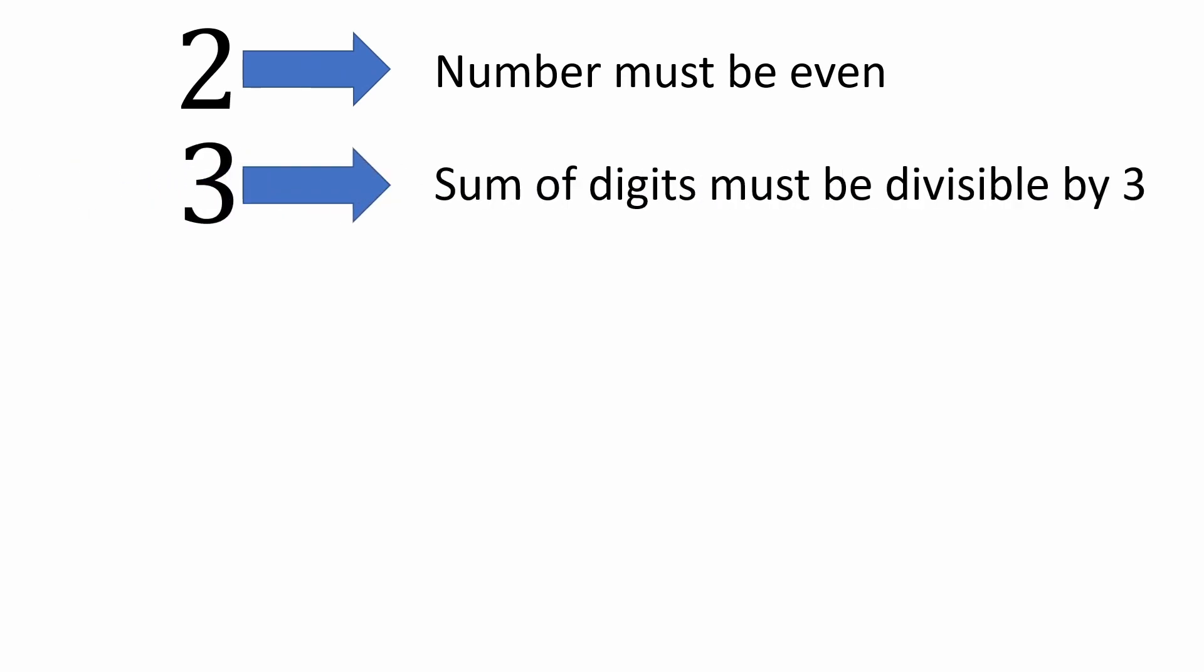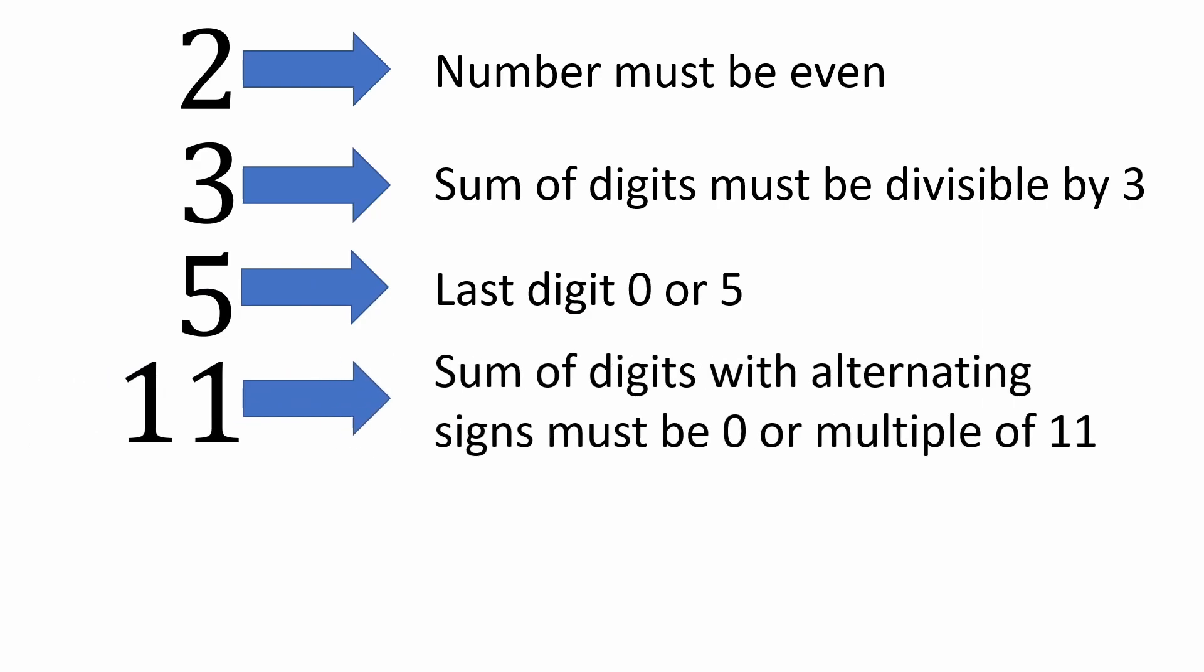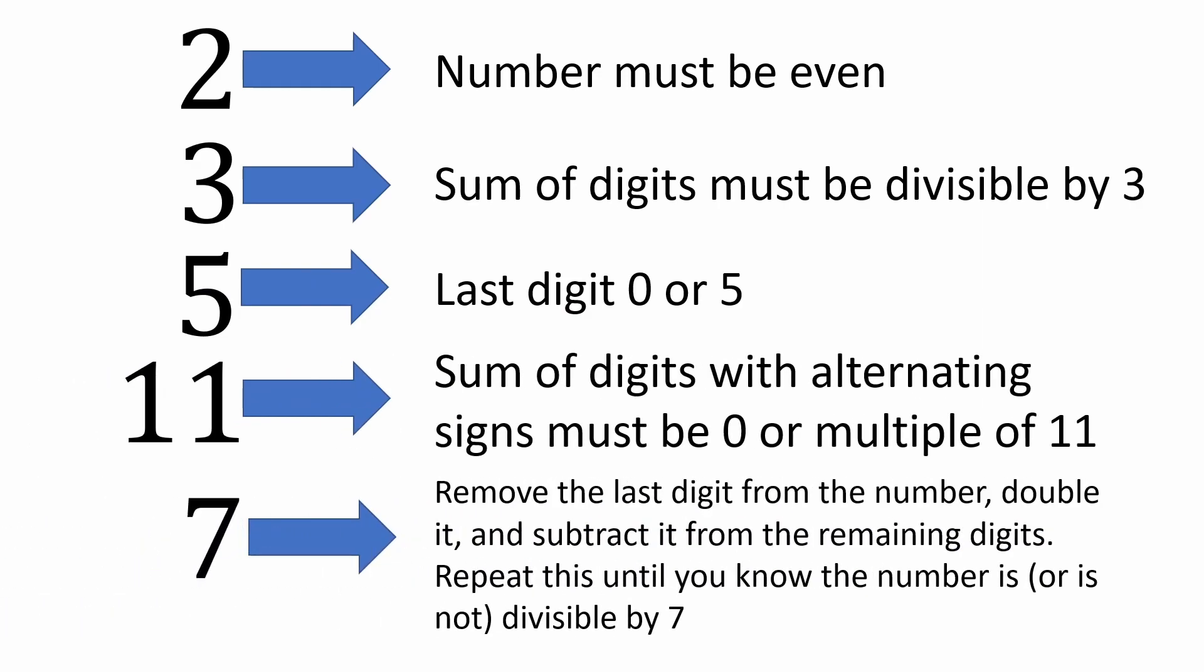One final question for you to ponder. Among the primes we tested for divisibility rules, why does 7 behave like this? After all, 2 is prime and it's a piece of cake. 3 is prime and it also has a simple rule. Same with 5 and 11. So why do things change so drastically with 7 and require a process to determine divisibility rather than a single observation or calculation?